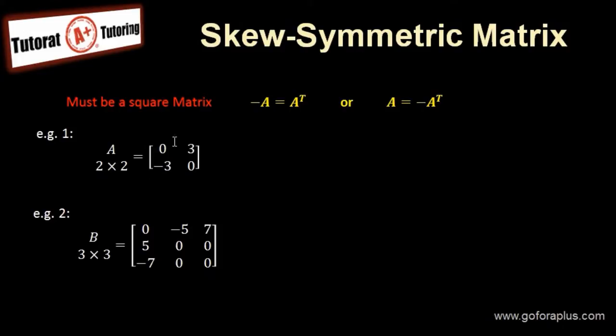So what is a skew symmetric matrix? It has to be a square matrix. And we say that minus A equals to A transpose, or A equals to minus A transpose. So the transpose and take the negative of the matrix is equal to the original matrix.